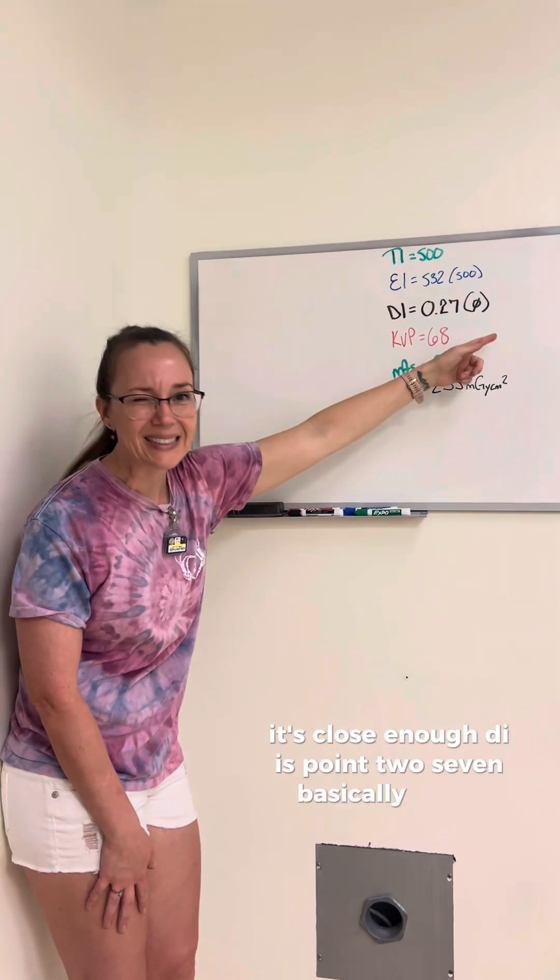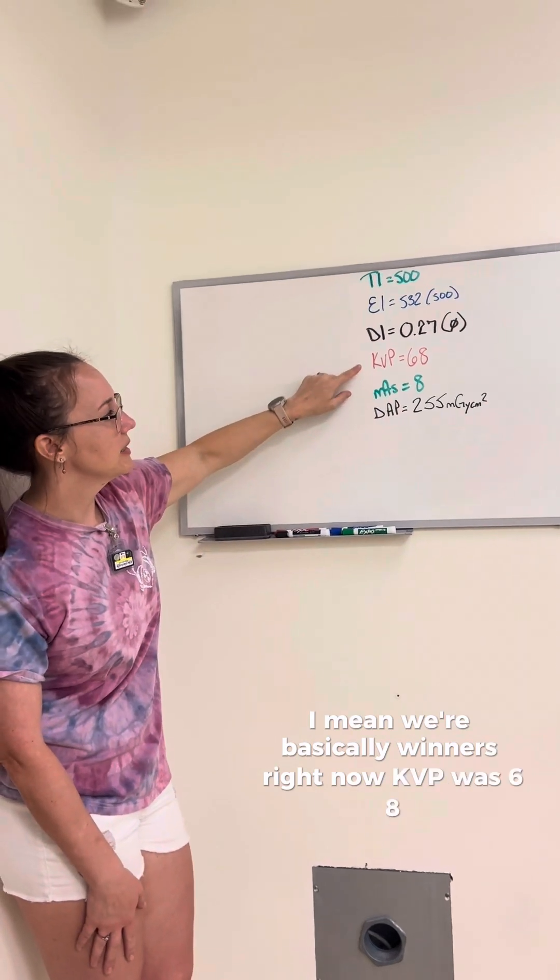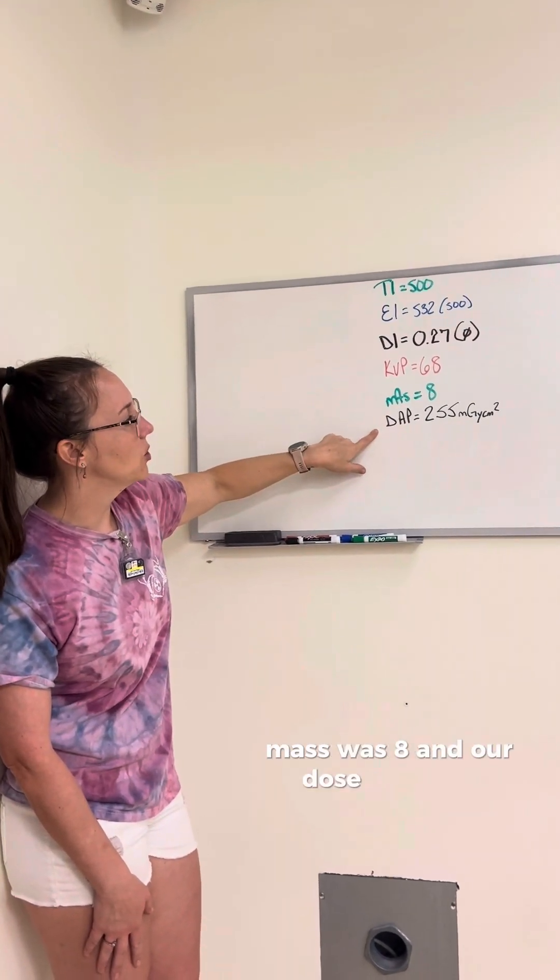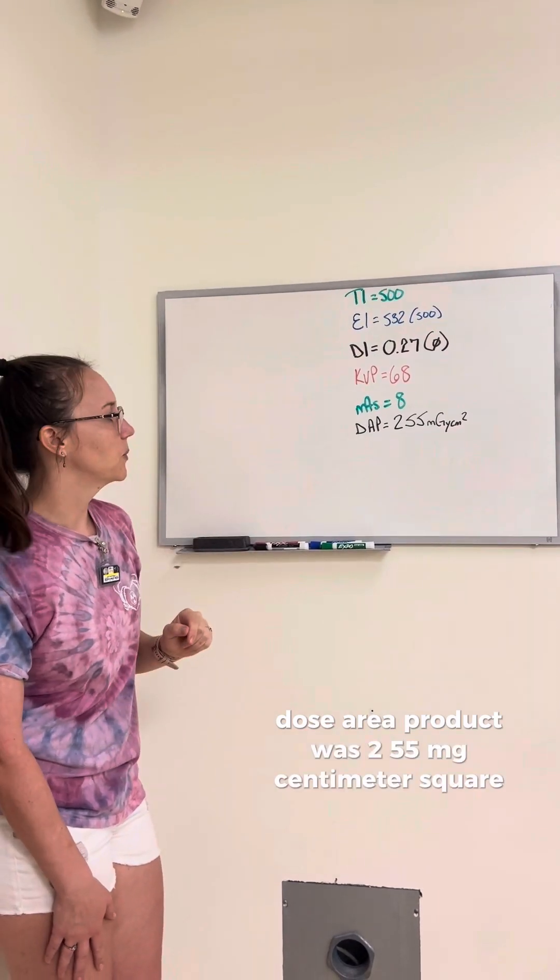DI is 0.27, basically a zero, I mean we're basically winners right now. KV was 68, mass was 8, and our dose, DAP area, dose area product was 255 milligray centimeter squared.